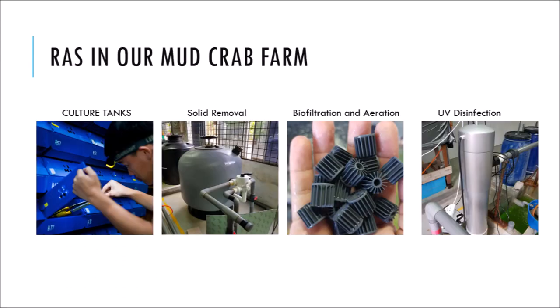So how is RAS used in our crab farm? Essentially, we have these five main processes. First are the culture tanks, which you can see on the left — a cellular system in which crabs are farmed in individual boxes. Solid removal is handled by sand filters, which are medium filters that filter out any uneaten feed or feces. Biofiltration and aeration are carried out in the biofiltration tank, which is a moving bed biofilm reactor, where bacteria grow on plastic media and process ammonia into a less toxic form.